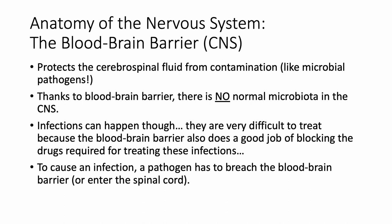The brain has another layer of protection called the blood-brain barrier, which protects your cerebrospinal fluid from contamination. The blood-brain barrier does a great job of protecting your central nervous system from microbial pathogens, and thanks to it, there are no normal microbiota in your central nervous system — your brain and spinal cord should be completely sterile.